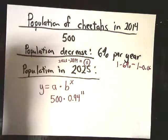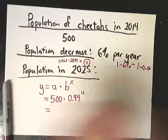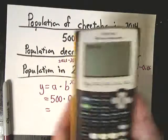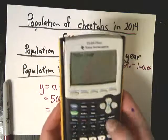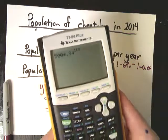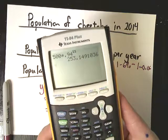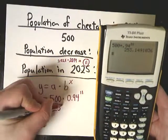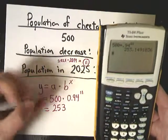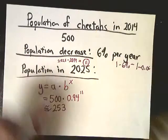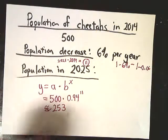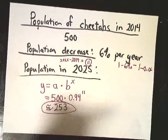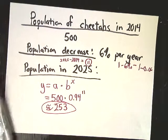So raise this to the 11th power: 500 times 0.94 raised to the 11th, and it gives you about 253. So around 253 cheetahs, which is a little sad. In 11 years, about half of your cheetahs are gone.